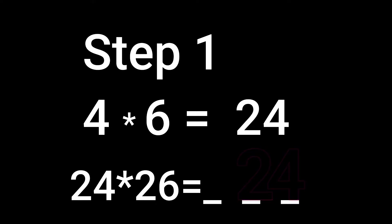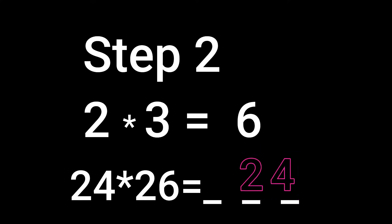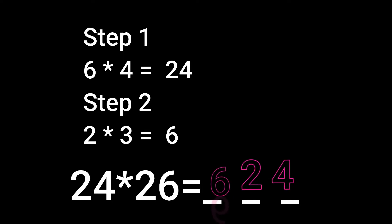To find the first digit, we can go to the next step. Step number 2: Multiply the tens digit with the number next to that digit. Here, 2 is the tens digit, so the number next to 2 is 3. So, 2 times 3 equals 6. So, the final answer is 24 into 26 equals 624.